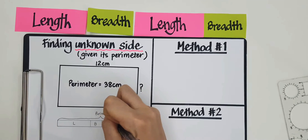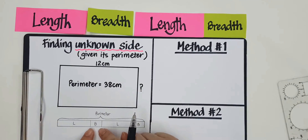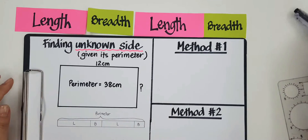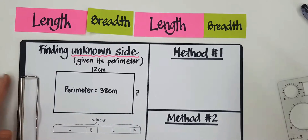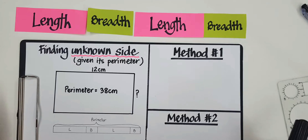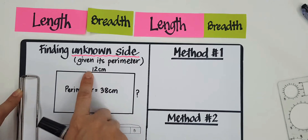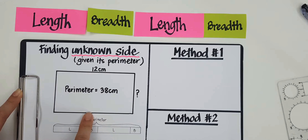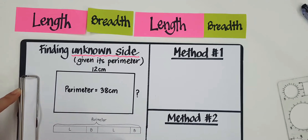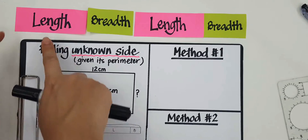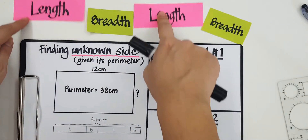If you have this model in mind when we solve the problem with our two methods later, it's going to be much easier. So keep this in mind. In our first method, we are basically going to take away the lengths. We know the two lengths — if this is 12 and this is 12 because it is a rectangle, I'm going to take away two lengths. I'm going to take the parameter and take away the two lengths.